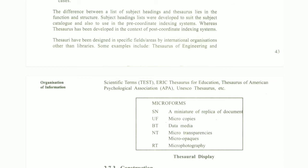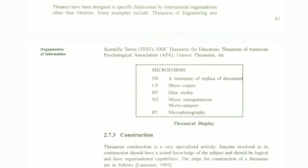Another function is to provide a map of concepts in a subject or field, enabling indexers or searchers to identify different concepts. The difference between a list of subject headings and a Thesaurus lies in its function and structure. Subject headings are designed to suit the subject catalog and are used in pre-coordinating indexing systems, whereas a Thesaurus has been developed in the context of post-coordinating indexing systems.